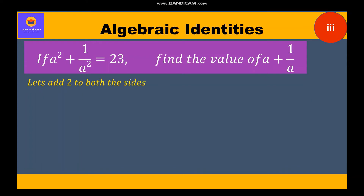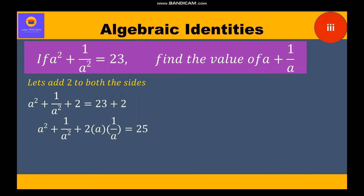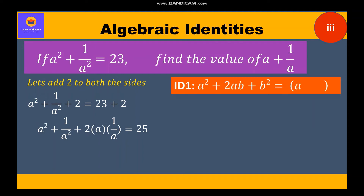The question arises: why do we add 2 and not subtract? Because we have to find a plus 1 by a — there is a plus here — so clearly it is identity 1. We write a square plus 1 by a square plus 2 is equal to 23 plus 2. Further, we write a square plus 2 into a into 1 by a plus 1 by a whole square is equal to 25, since a with a gets cancelled leaving 2.